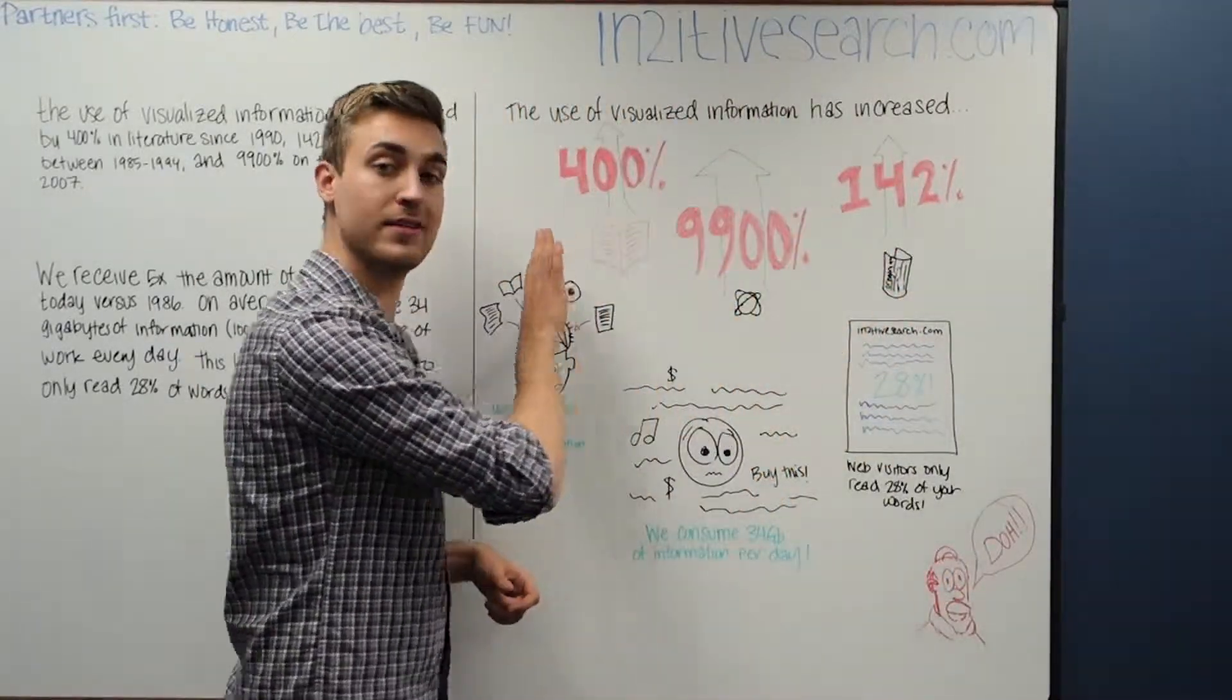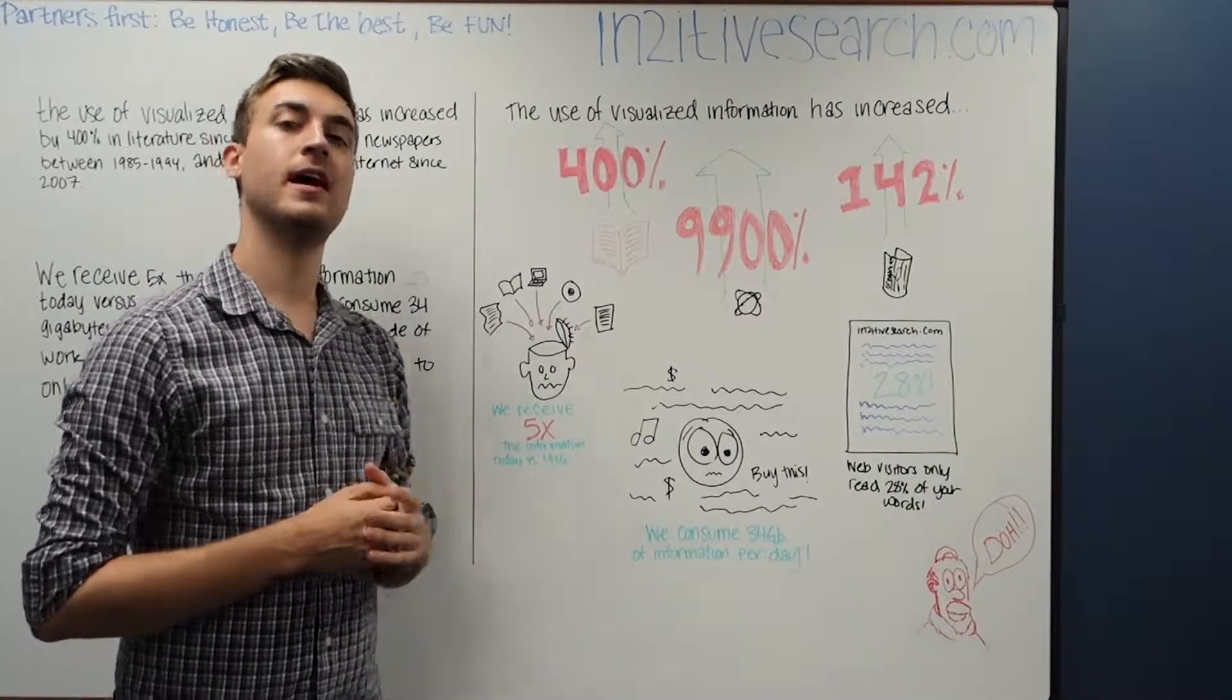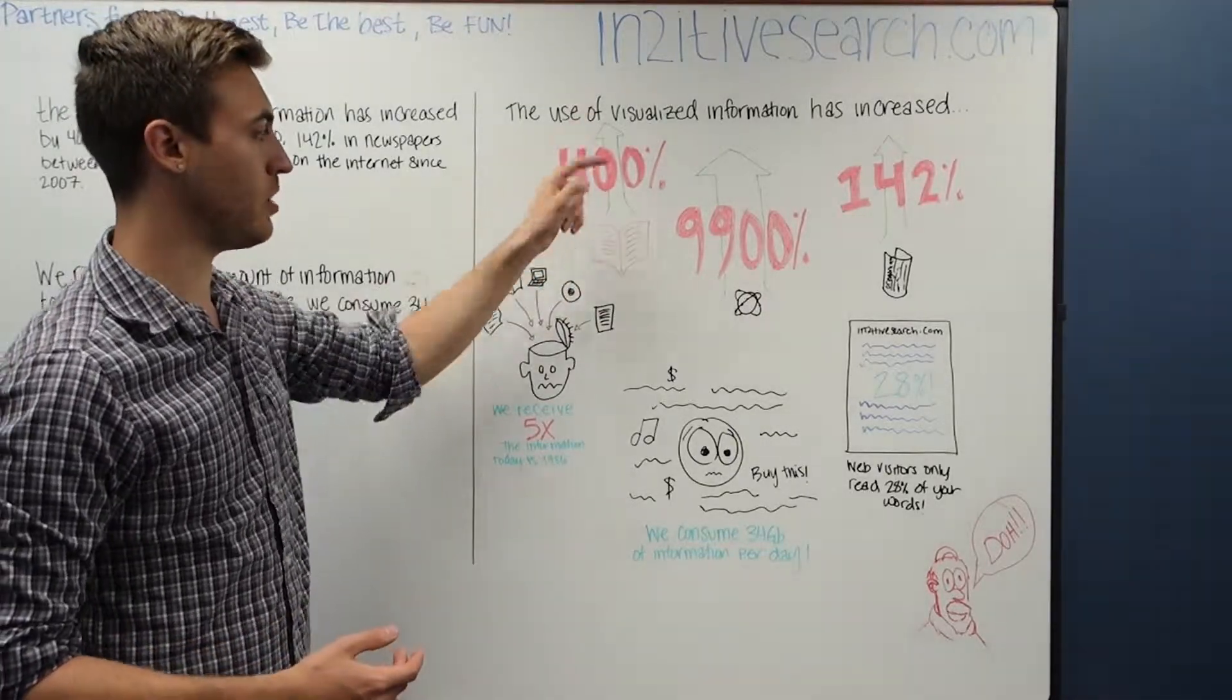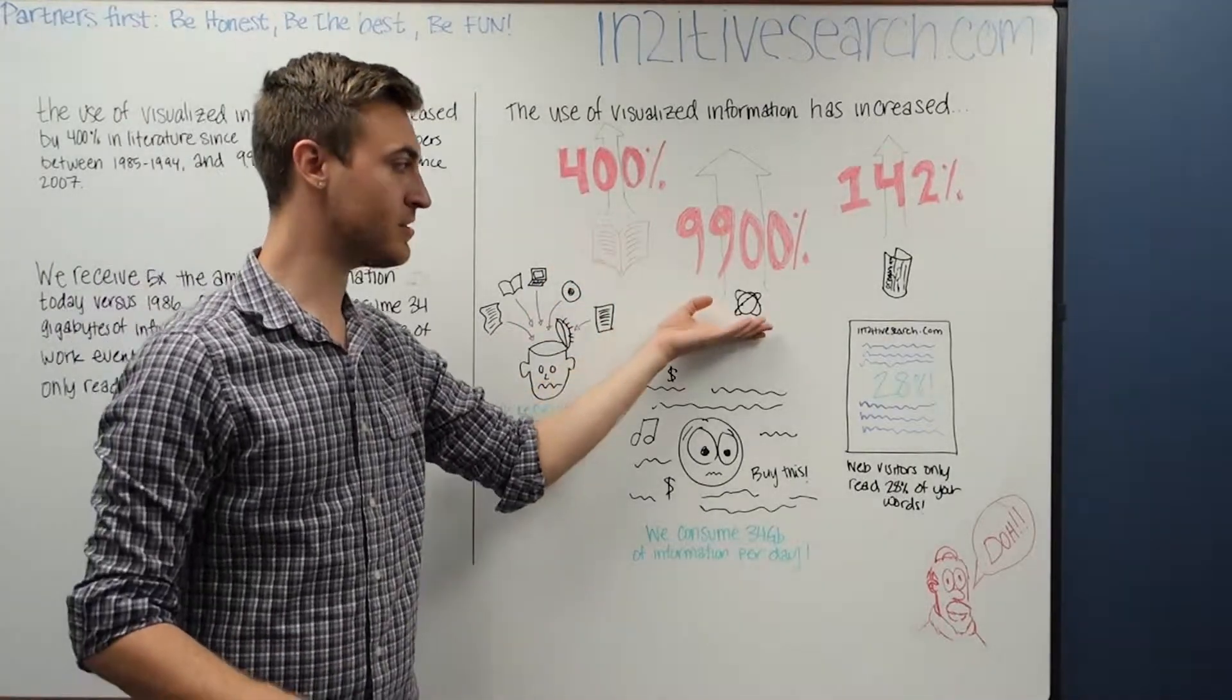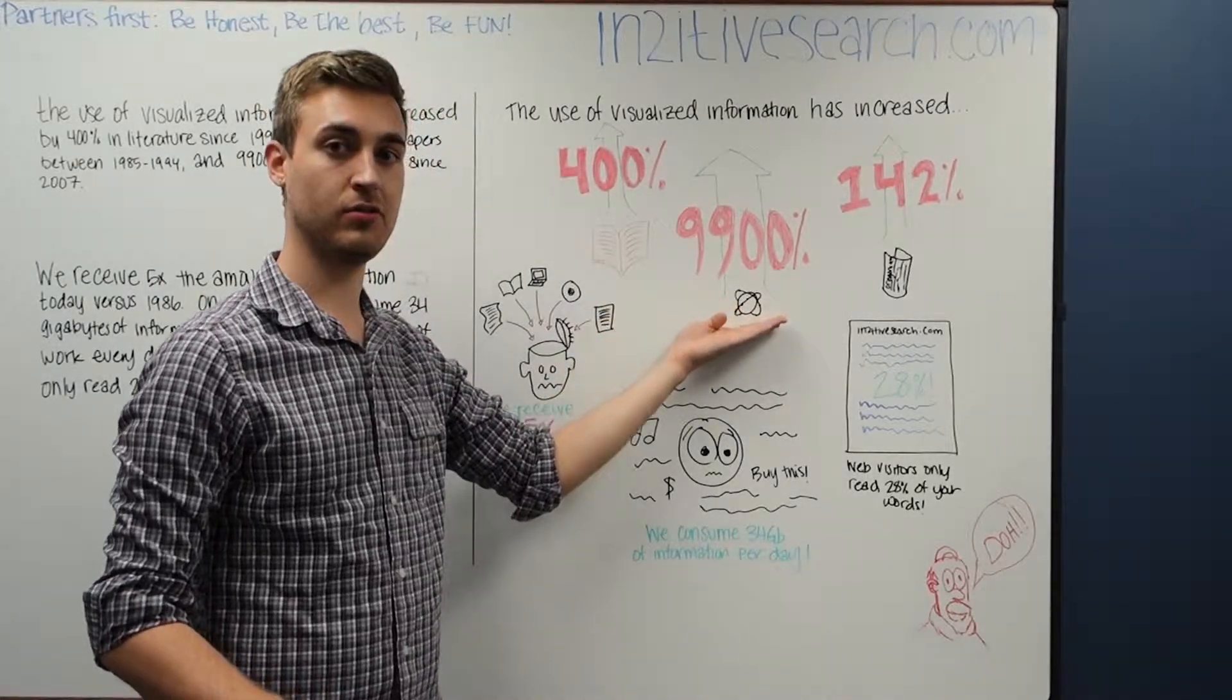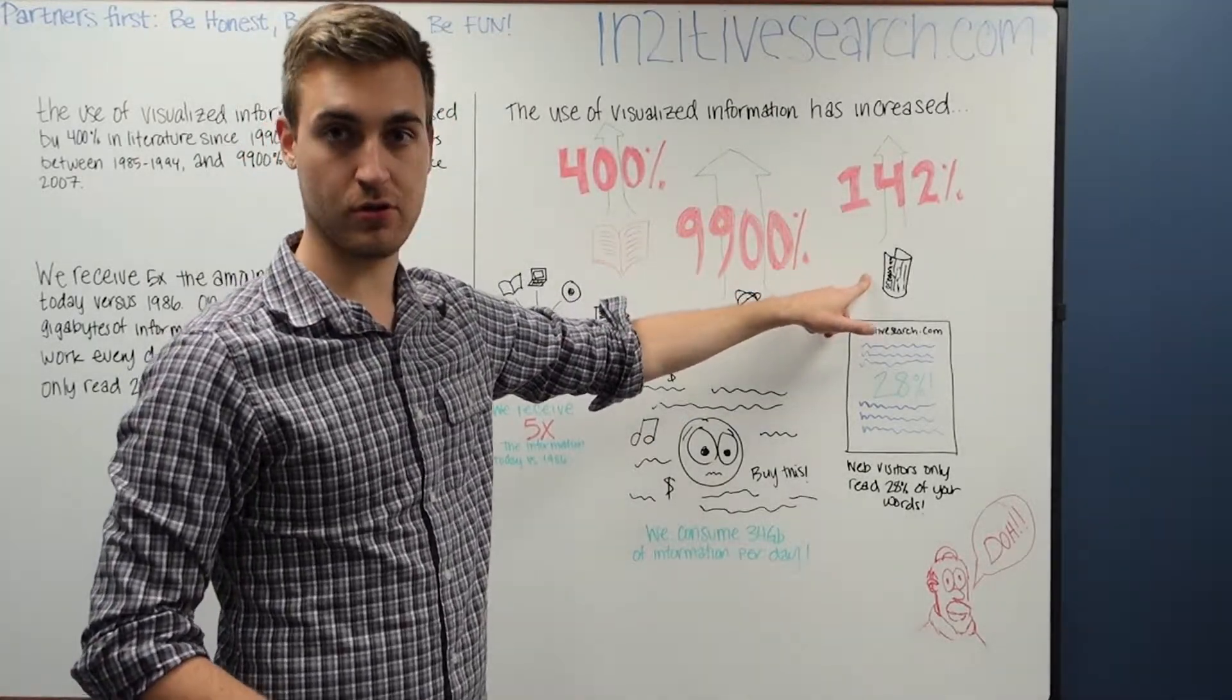So let's go on over here and view the same information visualized. So right here, I have a quick sentence at the top. The use of visualized information has increased, 400%, I have it in big red bold letters, green arrow going up, and a little crudely drawn book. Next over here, we have 9,900% on the internet. I have a little crudely drawn internet symbol. And then 142% increase in newspapers. Again, a crudely drawn newspaper.